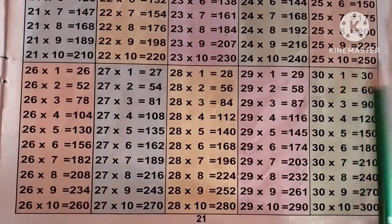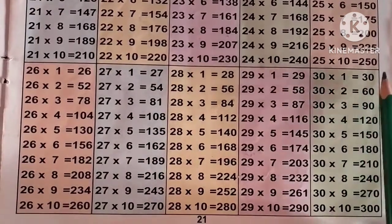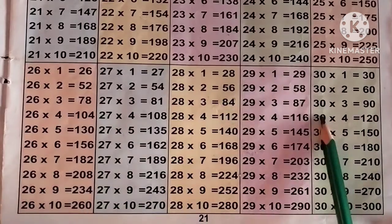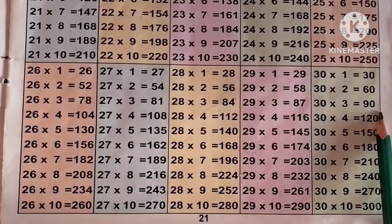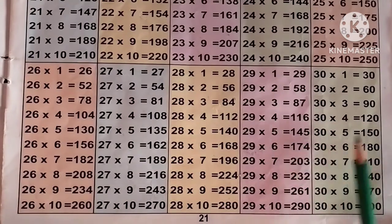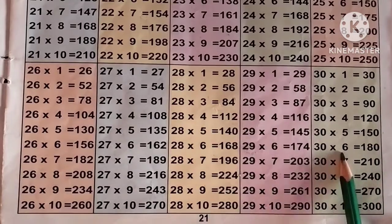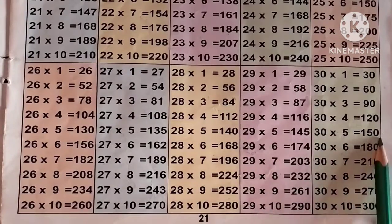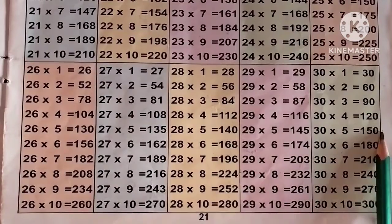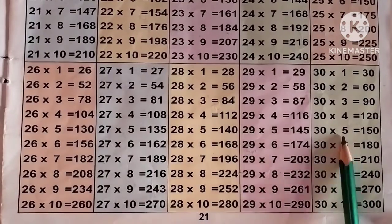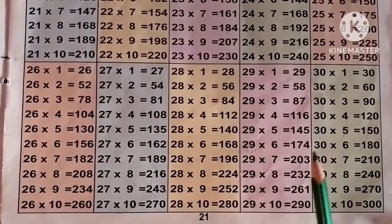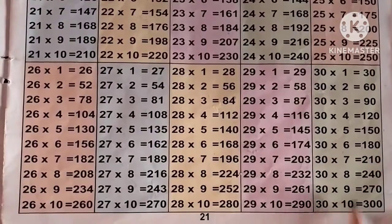Now last, the table of 30: 30 ones are 30, 30 2s are 60, 30 3s are 90, 30 4s are 120, 30 5s are 150, 30 6s are 180, 30 7s are 210, 30 8s are 240, 30 9s are 270, 30 10s are 300.